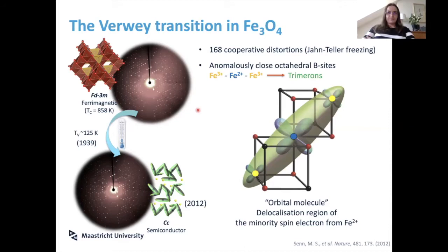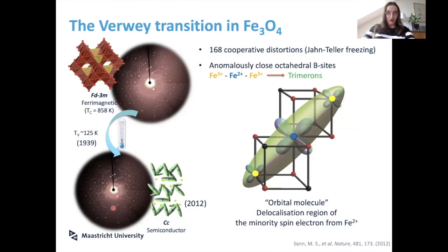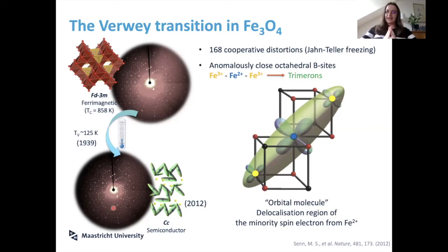What you can see, especially at a synchrotron, is that you go from your nice cubic structure to a very subtly distorted structure with a lot of superstructure reflections. The patterns don't look very different at first glance, but there is a scatter of tiny peaks from a monoclinic superstructure that disrupts the cubic structure. This comes from lots of cooperative distortions — every atom shifts slightly from its ideal cubic position, 168 cooperative distortions in total.